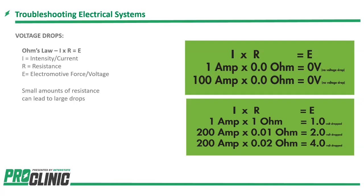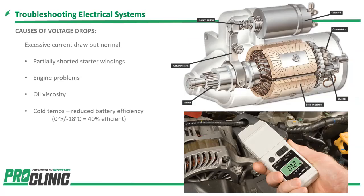We can change the formula to C × R = V for voltage if you prefer. If you don't want to memorize the formula, you can fill out our survey at the end of this — one of the questions asks if you'd like a copy of this presentation, so we'll send you a PDF for future reference. Jeff, you want to talk to us about the causes of voltage drops?